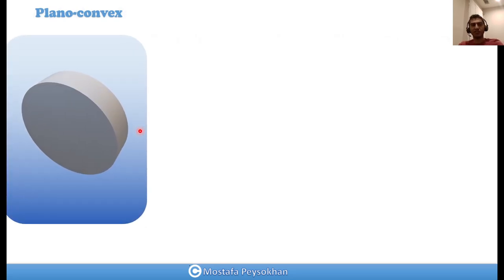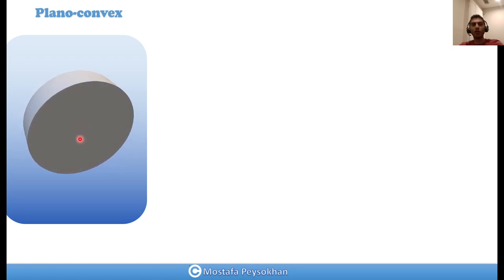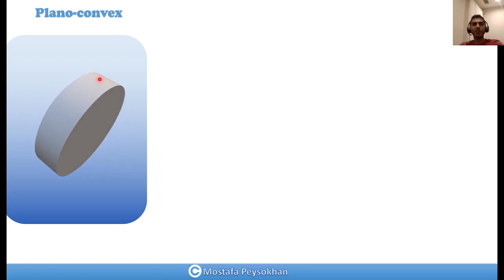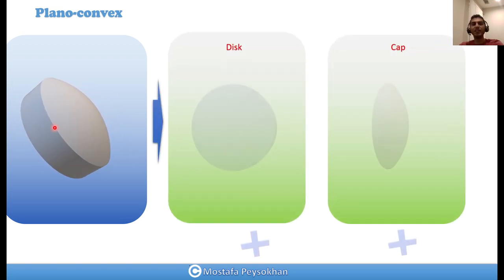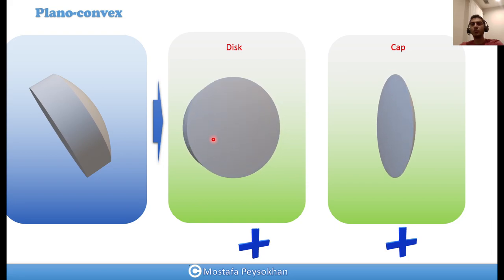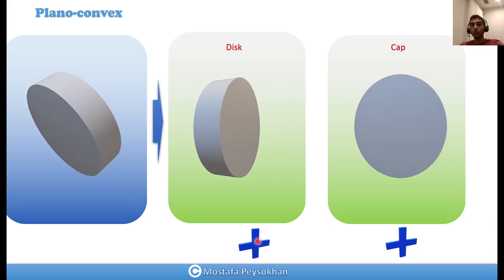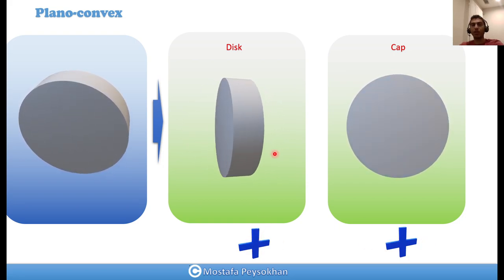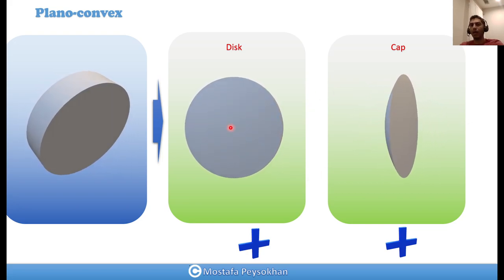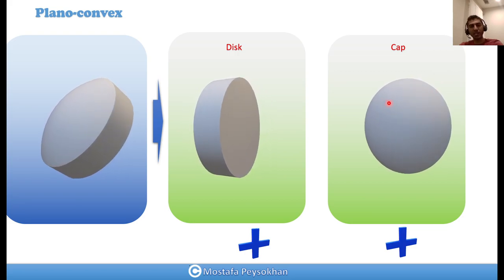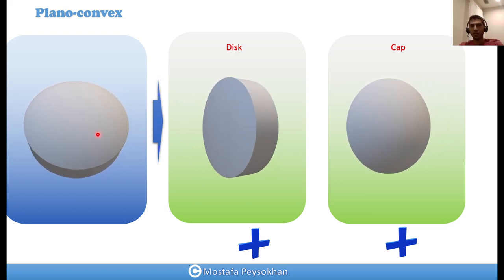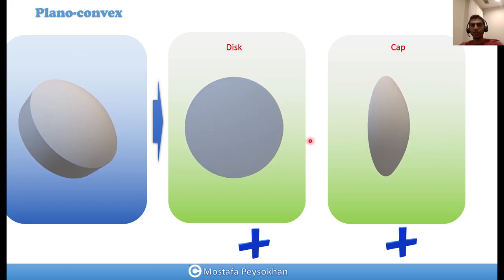Now let's look at the plano-convex lens. A plano-convex lens has one flat surface and one convex surface — that's why we call it plano-convex. We can decompose this lens into two elements, both with positive sign: a disc plus a cap. We know how to calculate the weight of a disc and the weight of a cap, so we can easily decompose a plano-convex lens into two parts.